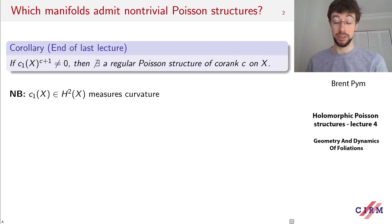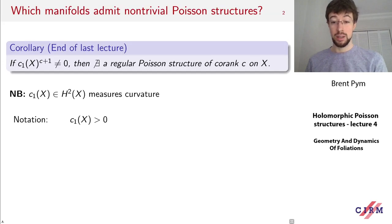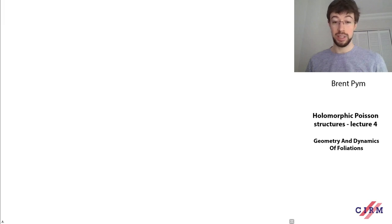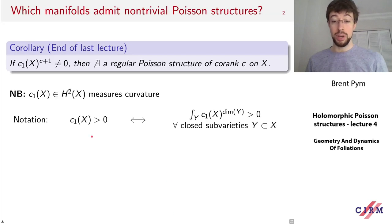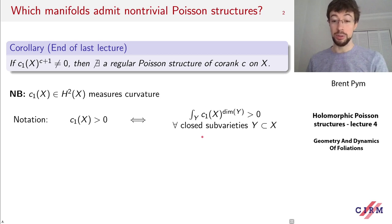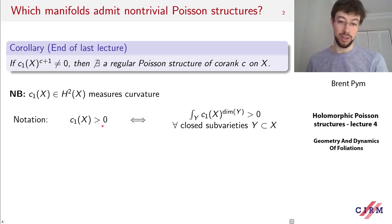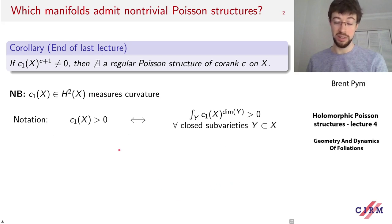What does the first Chern class do? It's a kind of measure of the curvature of the manifold X. In particular, we say the first Chern class is positive if, when we integrate powers of that cohomology class over closed subvarieties, we always get a positive number. This is equivalent to saying that the anti-canonical line bundle is an ample line bundle — a notion of positivity for the curvature.